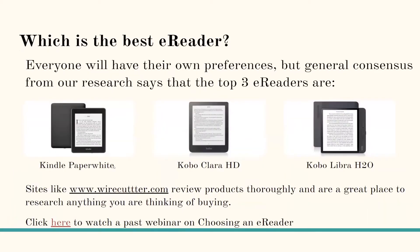Which is the best e-reader? Everyone will have their own preferences, but the general consensus from our research suggests the top three e-readers are Kindle Paperwhite, Kobo Clara HD, and Kobo Libra H2O. Sites like www.wirecutter.com review products thoroughly and are a great place to research anything you're thinking of buying. There is also a past webinar on choosing an e-reader on the Cyber Seniors website.